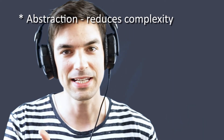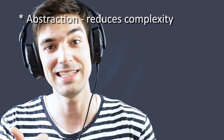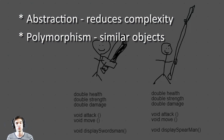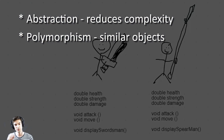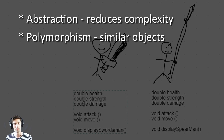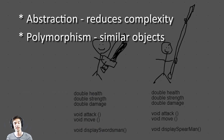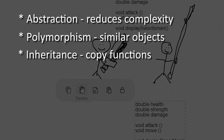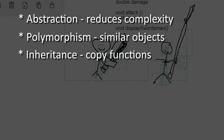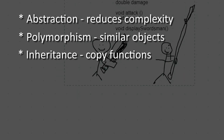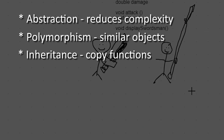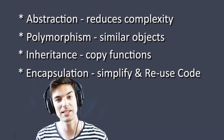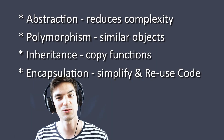Summary: Abstraction reduces complexity and makes changes afterwards easier. Polymorphism — having multiple forms of a single object — means different objects can respond to the same message in different ways; for example, a soldier displayed with a spear or with a sword. Inheritance means an object can copy functions and data from another class so you don't have to rewrite it. Encapsulation makes code easier to write, read, and reuse.